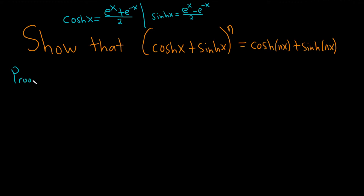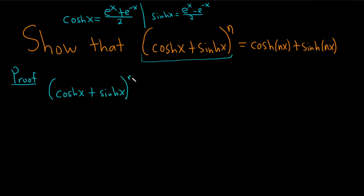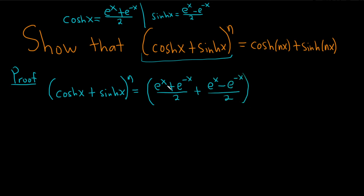So, proof. I think one way to do this is just take this and see what we get, and then we'll do the same thing on the other side and maybe we'll get the same thing. Let's try it. So we have cosh of x plus sinh of x to the nth power. This is equal to: cosh we know is (e to the x plus e to the negative x) over 2, plus sinh which is (e to the x minus e to the negative x) over 2.